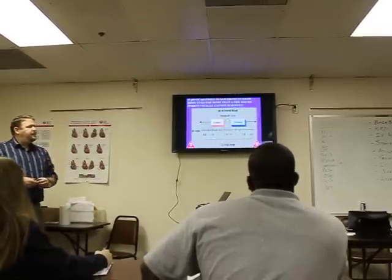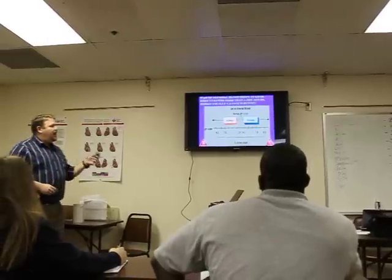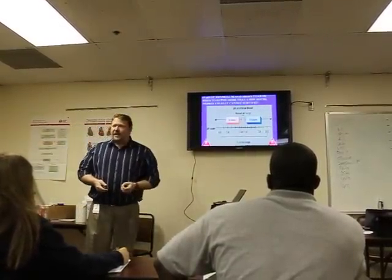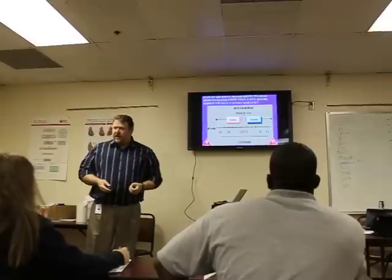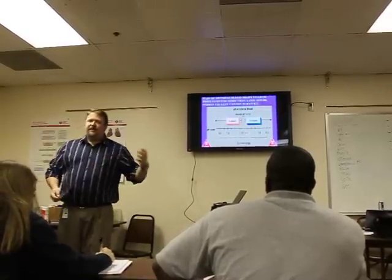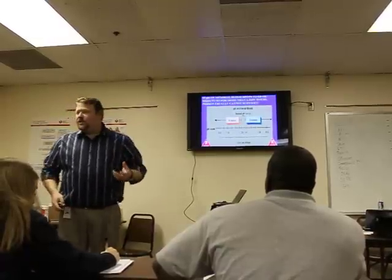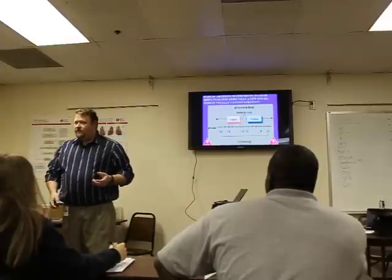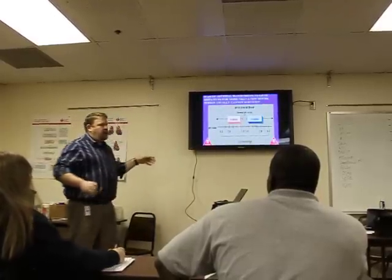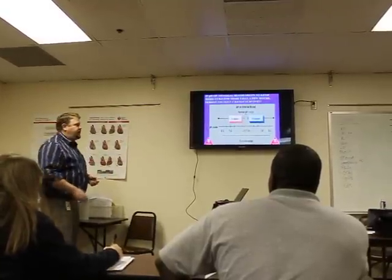If the pH of arterial blood drops below 6.8 or rises to 8.0 for more than a few hours, they personally usually cannot survive. This is why it relates to us: if somebody's been down for a long time, what is the drug that we're going to give them? Sodium bicarb — because we want to get a little more balance and give that person a chance to survive.